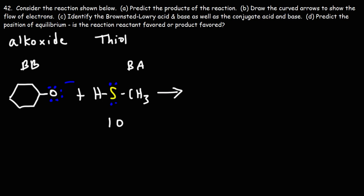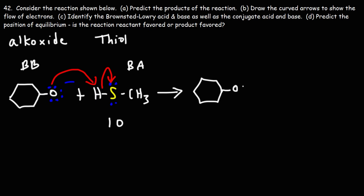Let's draw the curved arrows to show the flow of electrons, starting from base to acid. When the S–H bond breaks: hydrogen has an electronegativity of 2.1 and sulfur is 2.5, so sulfur is more electronegative than hydrogen. When the S–H bond breaks, those electrons go to the sulfur atom. We get the conjugate acid — cyclohexanol — and the conjugate base of the thiol.